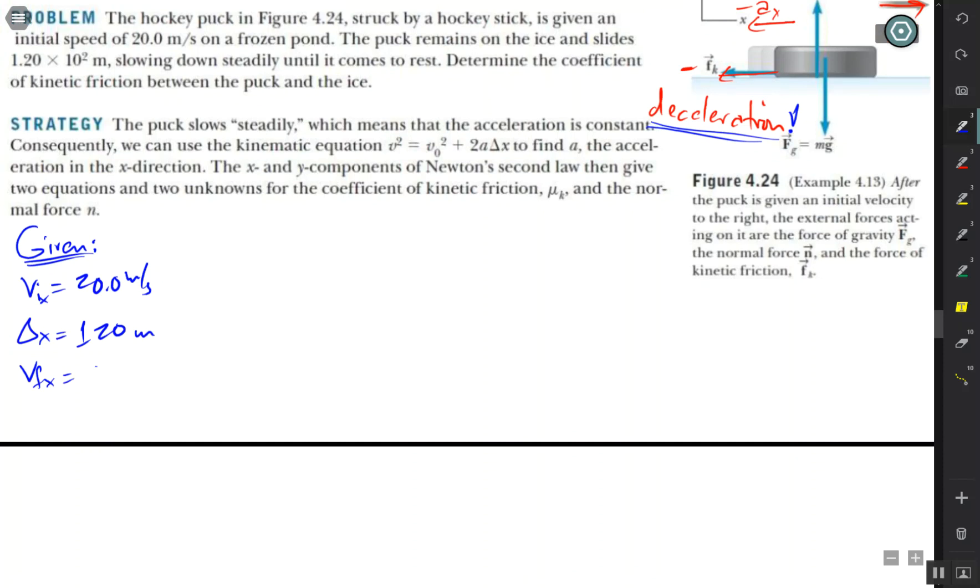And the final velocity, still in the x, is zero. And it's slowing down steadily, as I mentioned in the strategy. If you read that, the acceleration, still in the x, is constant.